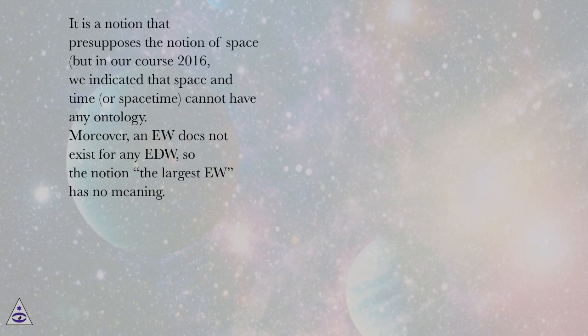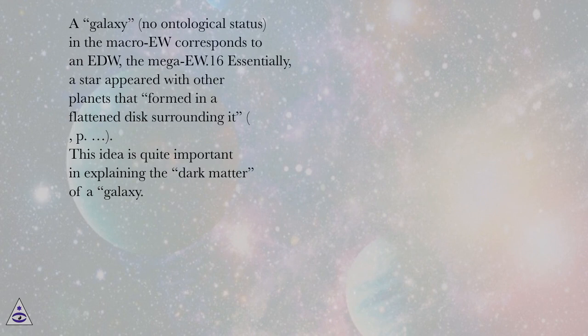Moreover, an EU does not exist for any EDW, so the notion 'the largest EU' has no meaning. A galaxy, no ontological status, in the macro-EU corresponds to an EDW, the mega-EU. Essentially, a star appeared with other planets that formed in a flattened disk surrounding it. This idea is quite important in explaining the dark matter of a galaxy.